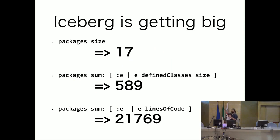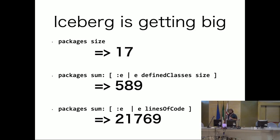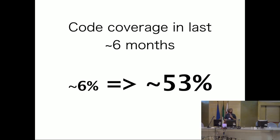Iceberg is getting big — not actually big: 70 packages, 600 classes, 20,000 lines of code. That is not big, but for my taste it is more code than a single person can manage without tests. I don't feel comfortable with this amount of code if I have no tests or automated way to confirm I haven't broken anything. In the last six months, we augmented the code coverage from around 6% to more than 50%.